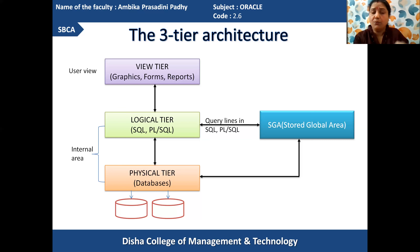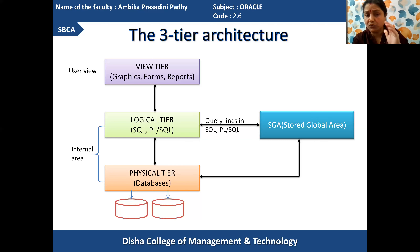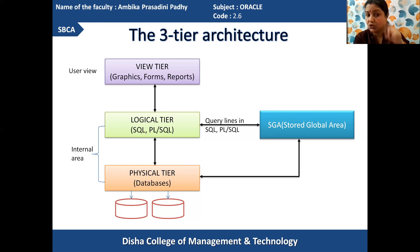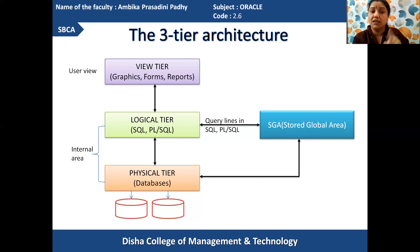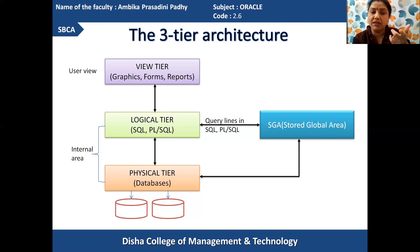When your user is providing certain information to execute, that is provided through the view-tier, being executed by the logical-tier, and stored in the physical-tier. When the data is executed, it will be sent back to the logical-tier, then from the logical-tier it will move to the view-tier, and the output can be received by the users.